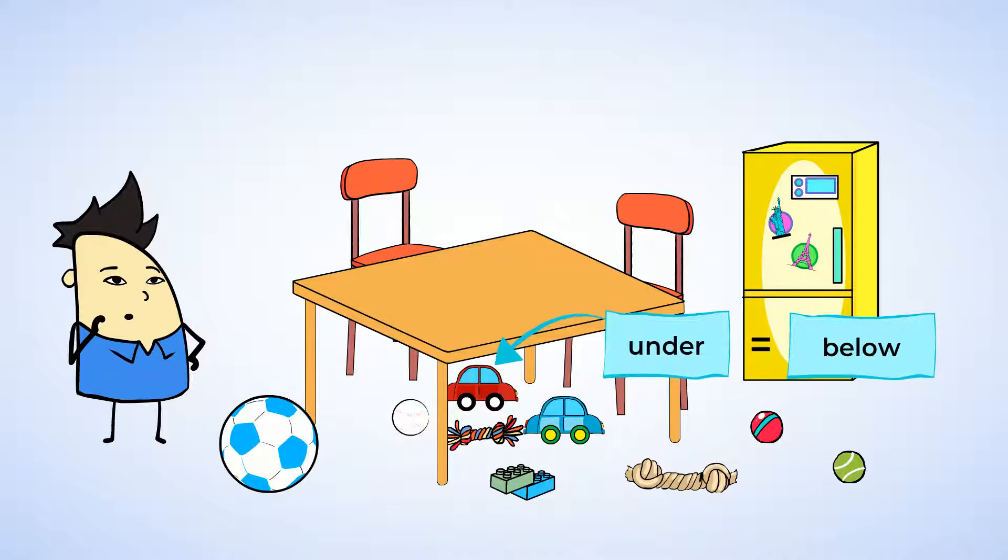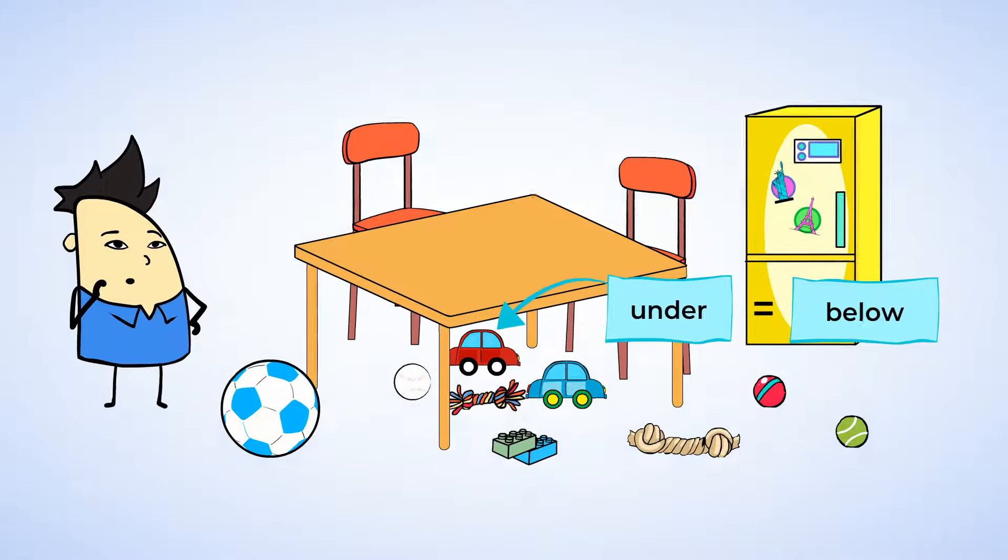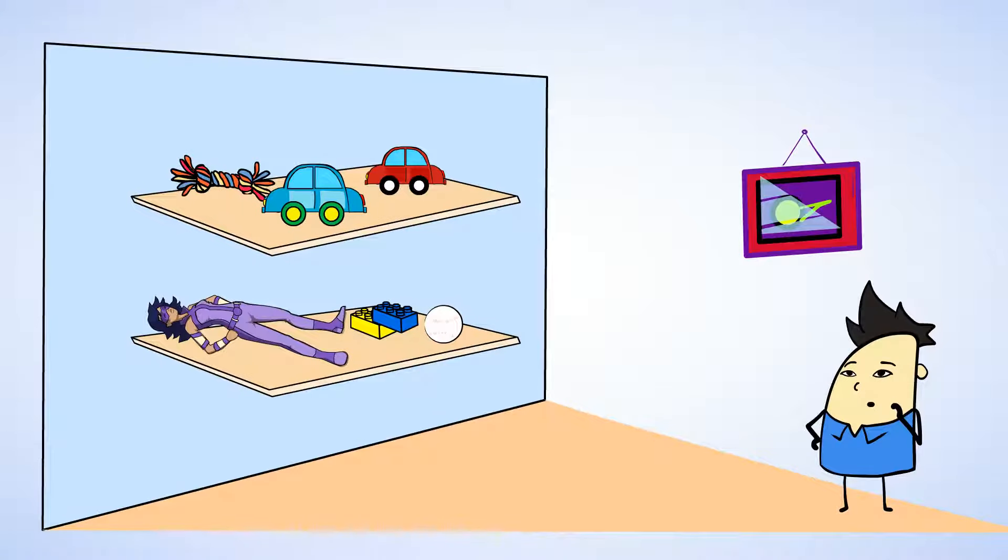Hmm, looks like this room needs some tidying up. Okay, Chen put his toy car and ball away on the shelves. He put his toy car away on the shelf above the ball. Now, above, that means higher than or over. So, the toy car is above the ball.